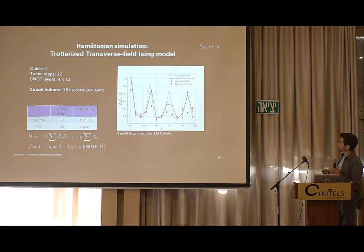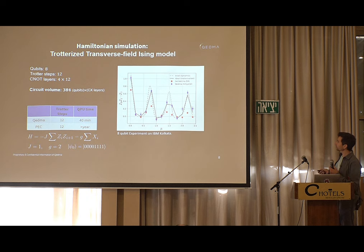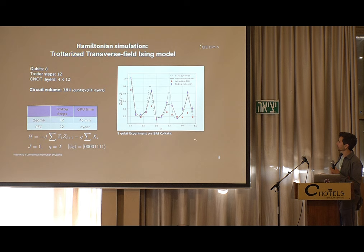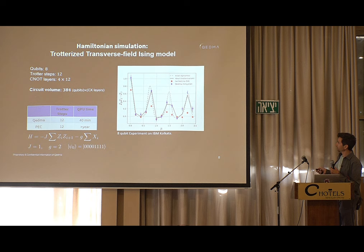The ideal Trotter circuit is the black solid line, which follows the ideal dynamics reasonably well. The blue points are what you get after using Kedma's error mitigation protocol, and the red points are what you get without it.